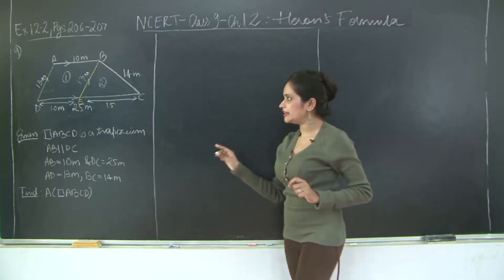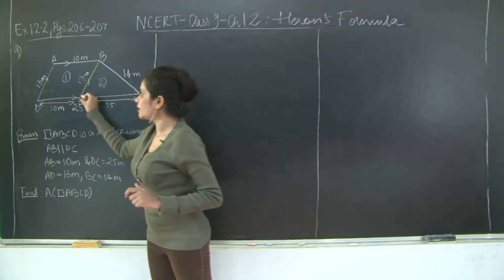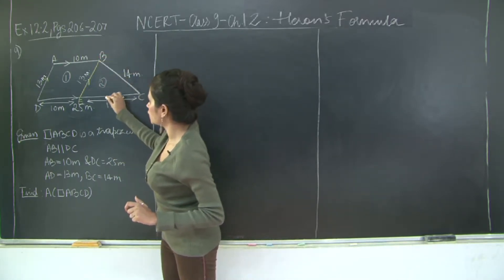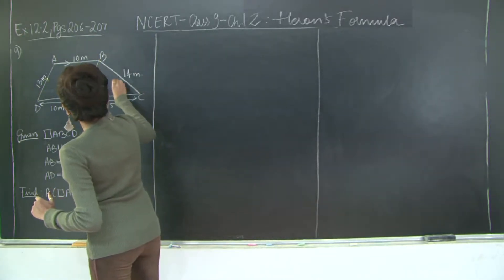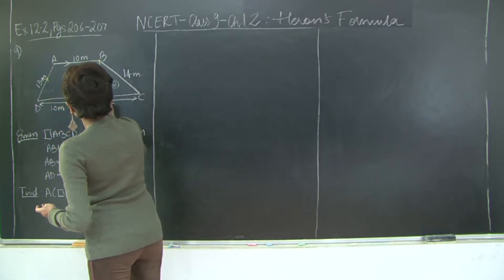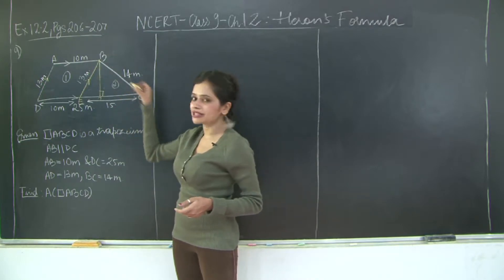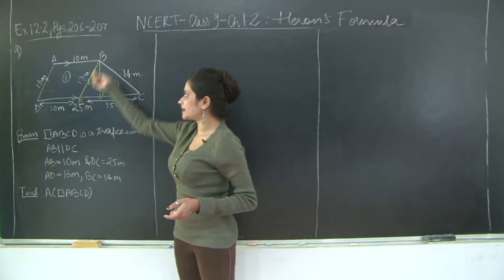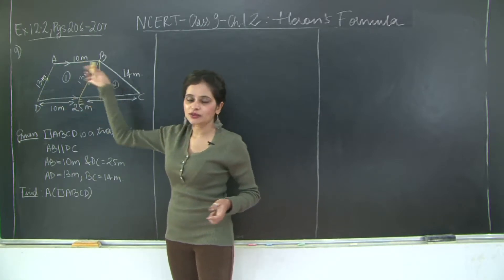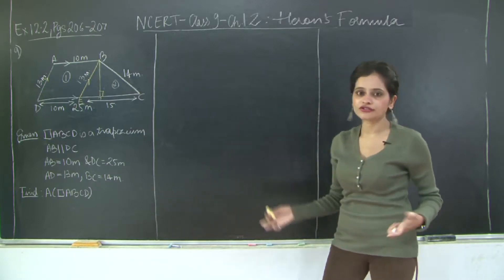Once we have the area of triangle BEC, we need to find the area of the parallelogram, which is base into height. We have been given the base but not the height. We will find the height by drawing a perpendicular BO on EC. The triangle and the parallelogram lie between the same base and between the same parallels, so they will have equal height. We can find BO from the area and base, and use it as the height for the parallelogram too.